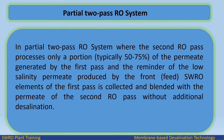In a partial two pass RO system, the second RO pass processes only a portion — typically 50 to 75% — of the permeate generated by the first pass. The remainder of the low salinity permeate produced by the front feed SWRO elements of the first pass is collected and blended with the permeate of the second RO pass without additional desalination.